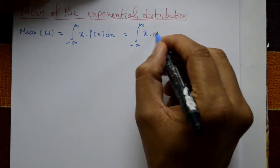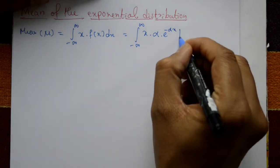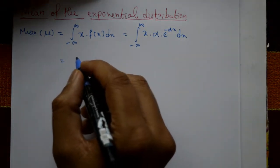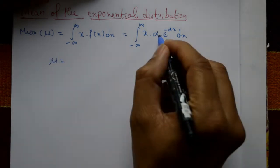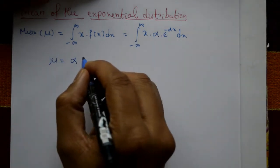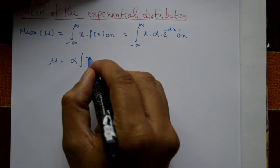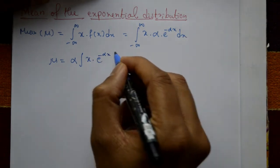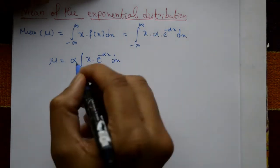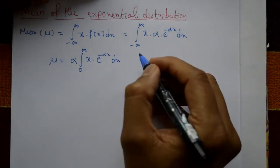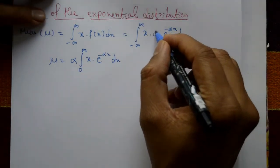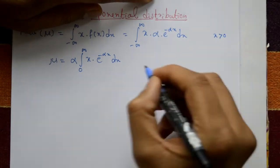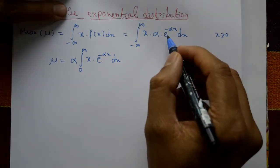Now f(x) is α into e raised to minus αx, with respect to x. So μ is equal to α — since α is constant, take it outside — integration of x into e raised to minus αx with respect to x, with limits zero to infinity.